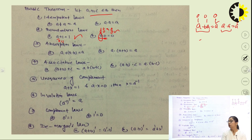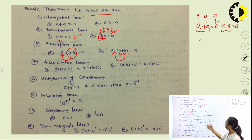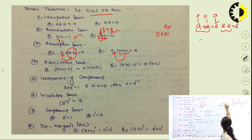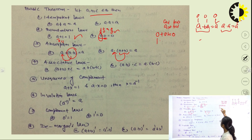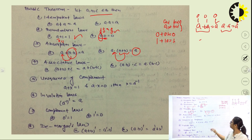The third law is the absorption law. Absorption law says that a plus (a dot b) equals a — these elements are absorbed into a, which is why we call it the absorption law. For example, if a equals 0 and b equals 1, then 0 plus (0 dot 1) equals 0. If a equals 1 and b equals 0, then 1 plus (1 dot 0) equals 1. For all four combinations — 00, 01, 10, 11 — you will get the same result, so these values are absorbed into the element a.